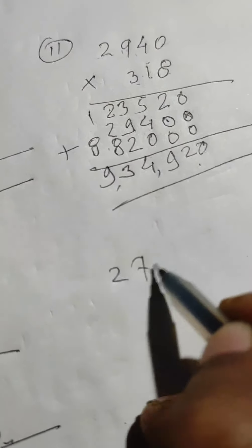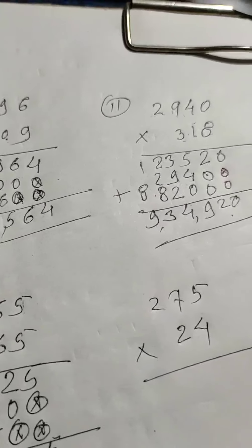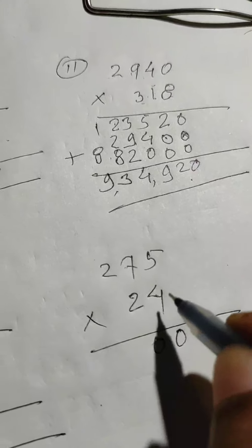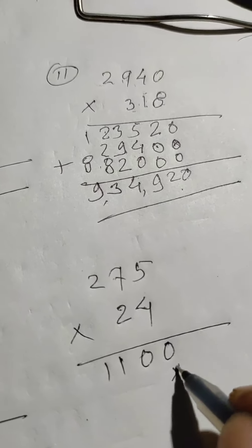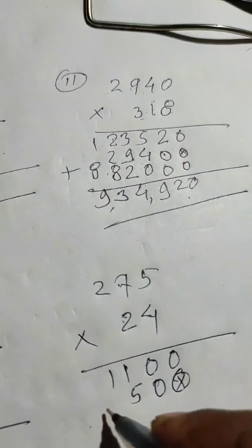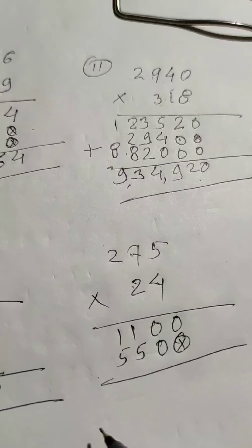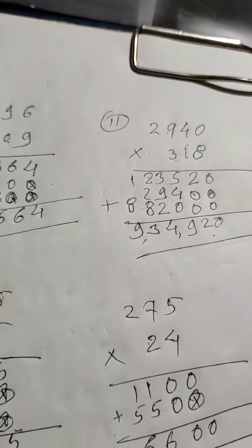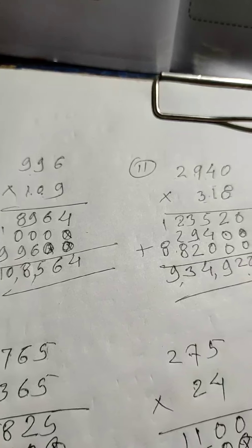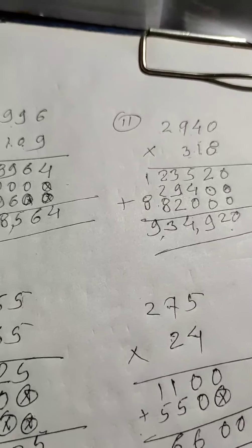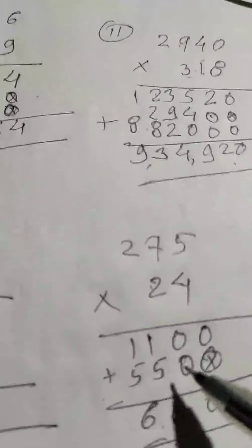275 × 24: 4 × 5 = 20, carry 2. 4 × 7 = 28 plus 2 = 30, carry 3. 4 × 2 = 8 plus 3 = 11. Then one zero: 2 × 5 = 10, carry 1. 2 × 7 = 14 plus 1 = 15, carry 1. 2 × 2 = 4 plus 1 = 5. Adding: 0, 5+1=6, 5+1=6. The answer is 6,600. So in two dozen such packs there are 6,600 balloons total.